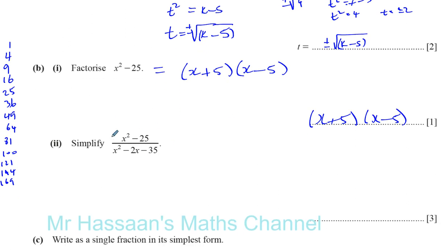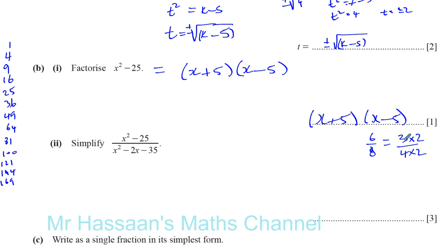Now, if you want to simplify this algebraic fraction, it's the same as simplifying a normal fraction. For example, if I had 6 over 8, most of you would say that's 3 over 4. What you're actually doing is factorizing - the numerator is 3 times 2 and the denominator is 4 times 2. You've taken out the highest common factor, which is 2, and cancelled them, leaving 3 over 4. That's what you're doing when simplifying a fraction.